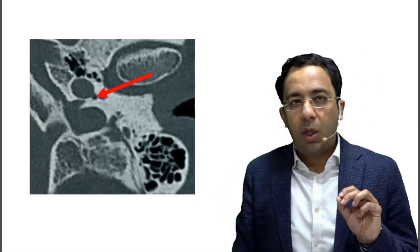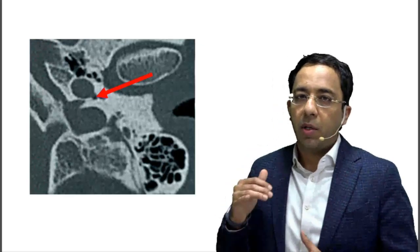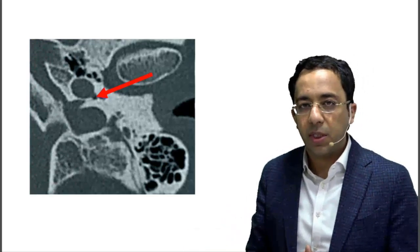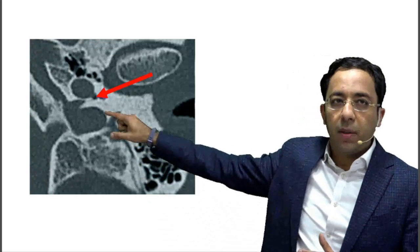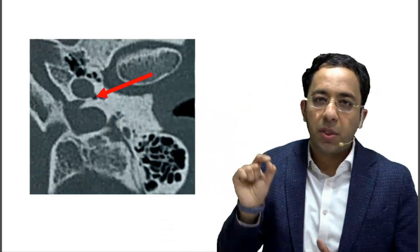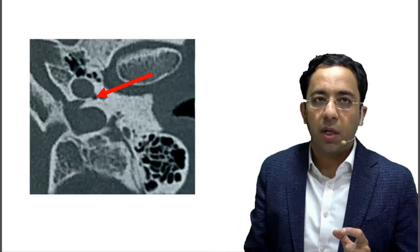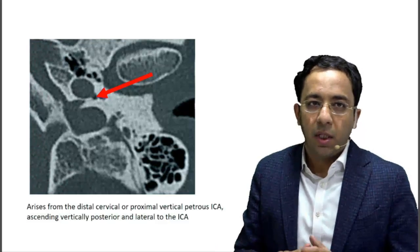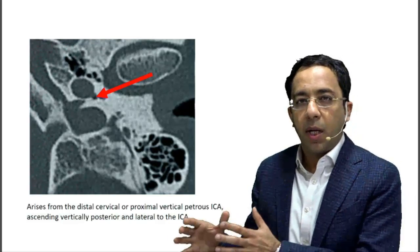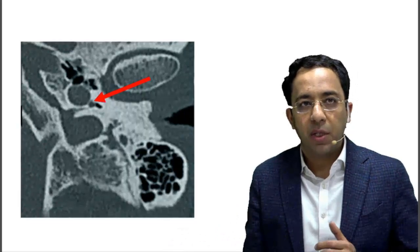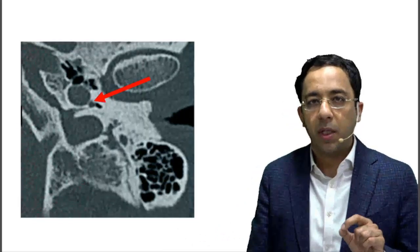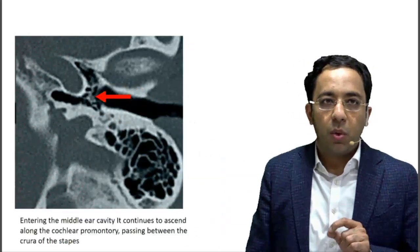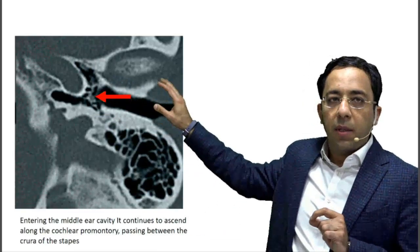Following the carotid artery in the region of the foramen lacerum and the petrous temporal bone on HRCT sections, the red arrow marks a branch coming out of the carotid canal from the internal carotid artery. A branch is seen arising from the vertical petrous part of the ICA, posterior and lateral to it, which we can follow further as soft tissue going into the middle ear.